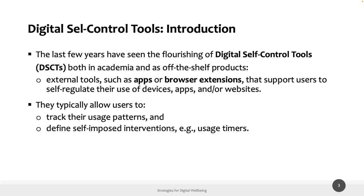The typical way researchers and tech companies like Google and Apple explore supporting users in achieving digital well-being is through digital self-control tools — external tools like mobile applications and browser extensions that help users self-regulate usage of devices, services, and applications. They typically allow users to track usage patterns through productivity dashboards and define self-imposed interventions like usage timers and blockers.